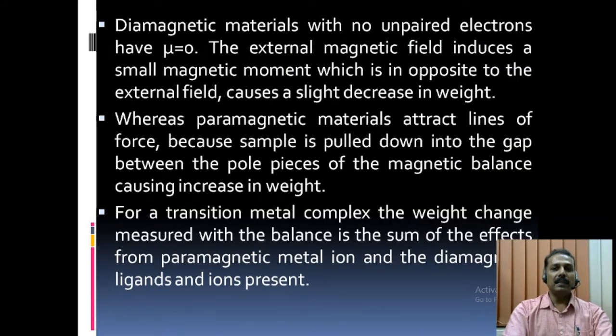Diamagnetic materials with no unpaired electrons have zero magnetic moment. The external magnetic field induces a small magnetic moment which is in opposite to the external field, causes a slight decrease in weight, whereas paramagnetic materials attract lines of force because sample is pulled down into the gap between the pole pieces of the magnetic balance causing increase in weight.